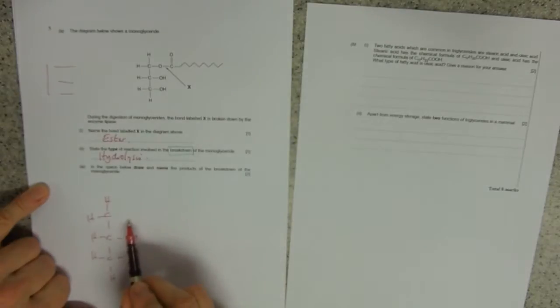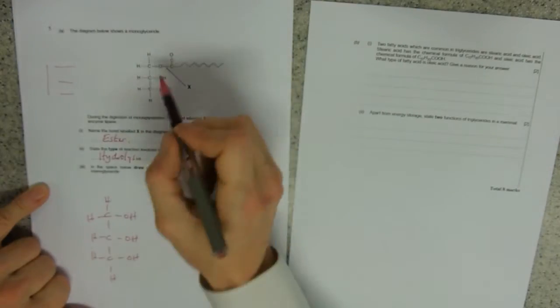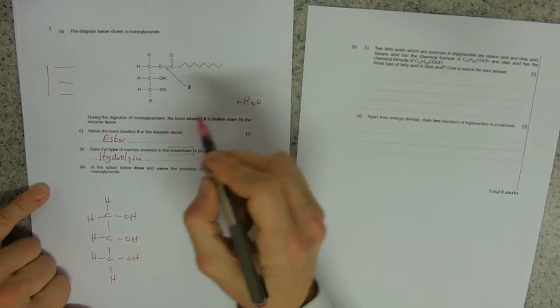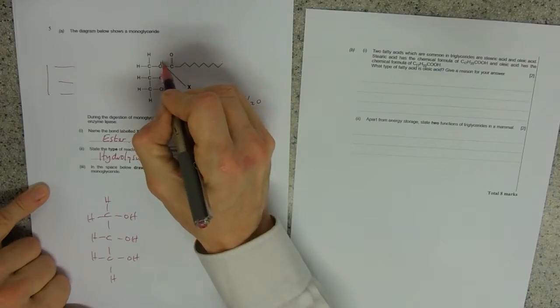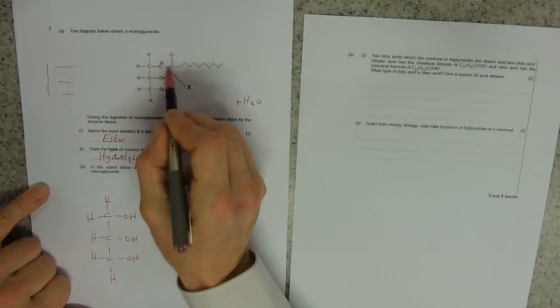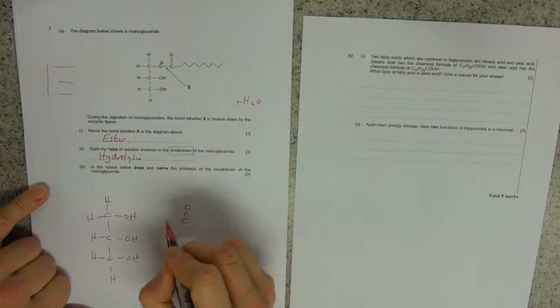And this is just going to be another OH there. So we've put a H in, so remember water—we're adding water. We've got rid of one H onto there now, and then we're going to put the O and the H onto the other bit.